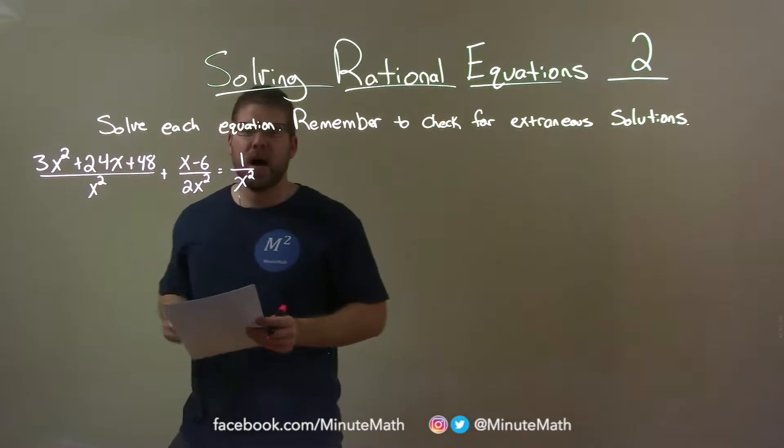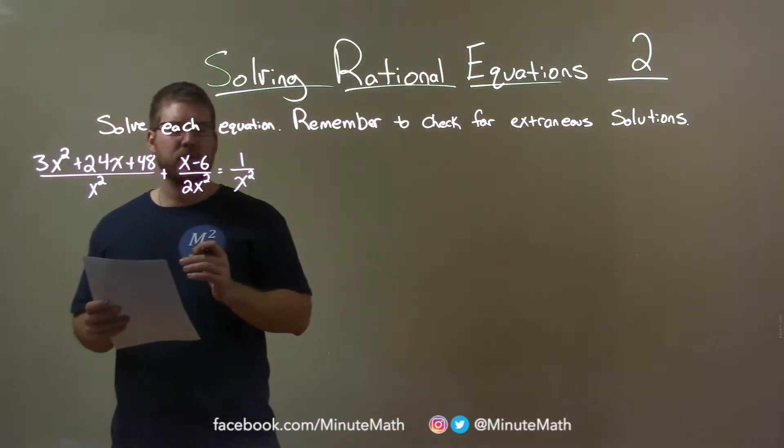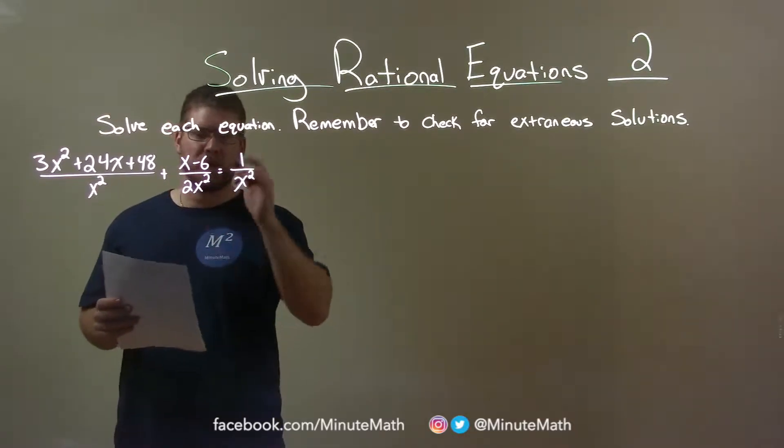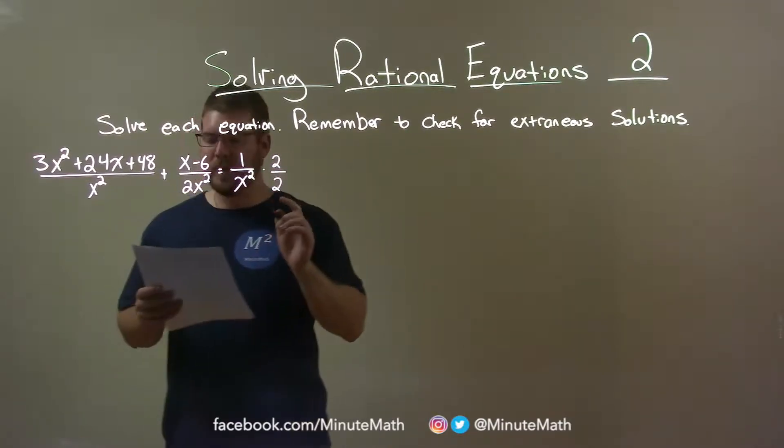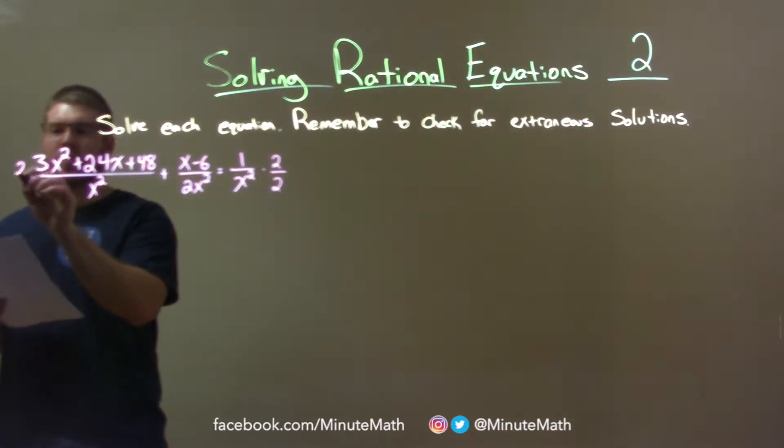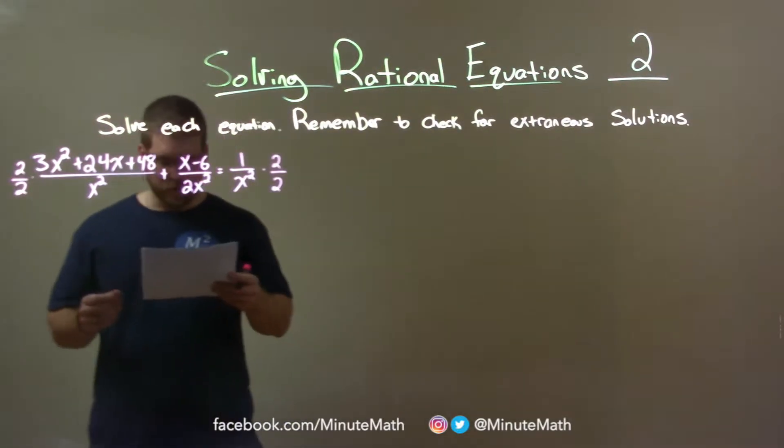Well, one thing we want to have is a common denominator across the board here. So my first step, I see there's a 2x squared here, and then x squared, and then x squared. If I multiply this one on the right by 2 over 2, its denominator will be 2x squared. Same thing over here, multiply this one by 2 over 2, denominator becomes 2x squared.